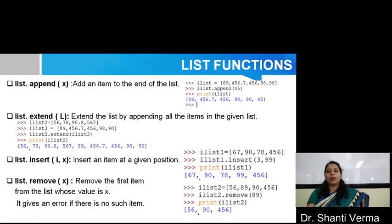There are various types of functions available for list operations. The first is append. Append is used to add an item to the end of the list. You can see in the example that I declare a list having four elements and I want to add another item. So I write ilist.append(45). You can see that 45 is appended at the last position of the list.